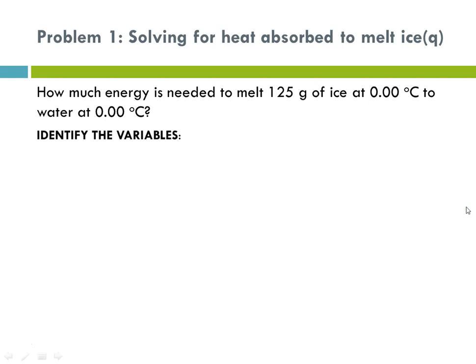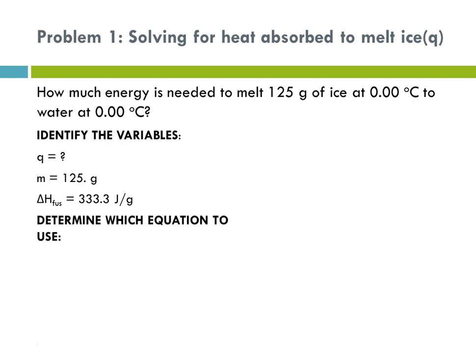As always, identify the variables. Here we're solving for q, so that's our question mark. M is our mass, 125 grams. And since we're melting ice, we have to use the delta H of fusion, which is a constant, and it's 333.3 joules per gram. The equation that doesn't have delta T in it is the one we'll be using: q equals m, the mass, times the delta H of fusion.